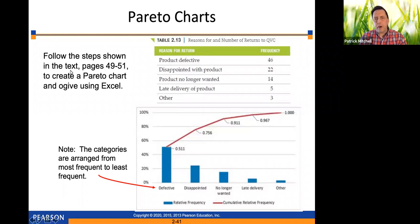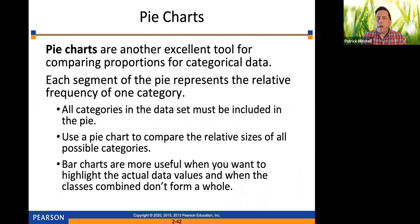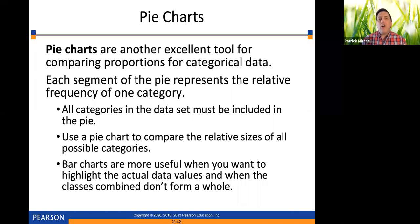They're referring you to the textbook for the Excel instructions, and you should be able to access that in the e-book. Next we have pie charts — everybody's seen a pie chart. You see these in newspapers and on TV news. Pie charts are an excellent tool for comparing proportions for categorical data. Each segment of the pie represents the relative frequency of one category. All categories in the data set must be included in the pie. Bar charts are more useful when you want to highlight actual data values. You also have to be very careful about not using pie charts when some of the categories overlap.